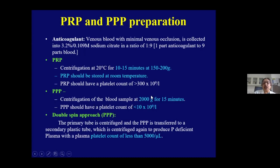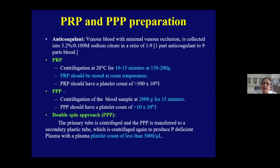Platelet-poor plasma is prepared by high spin at 2000 G for 15 minutes. For lupus anticoagulant testing, a double-spin approach is used to prepare platelet-deficient plasma — with a platelet count less than 5,000 per nanoliter — to avoid providing exogenous phospholipid, since phospholipid correction is one of the confirmations for lupus anticoagulant.